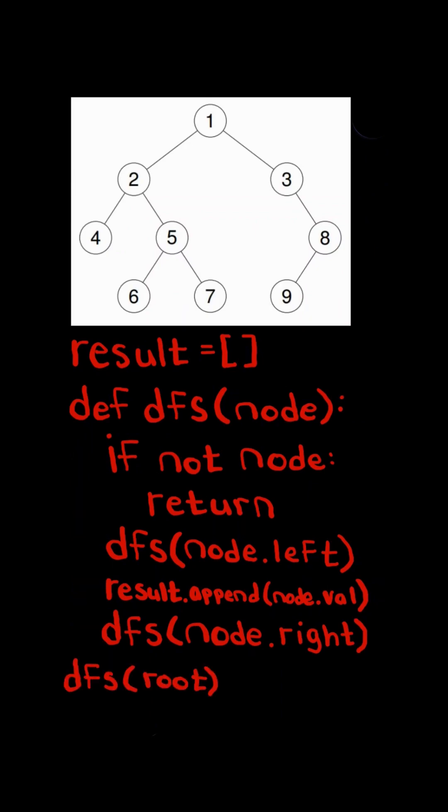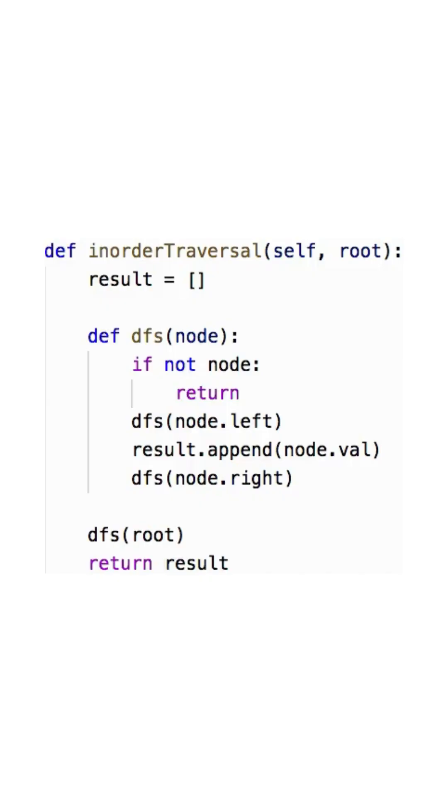We initially call this function with the root node, and at the end, we return the list. And here's the code to do so.